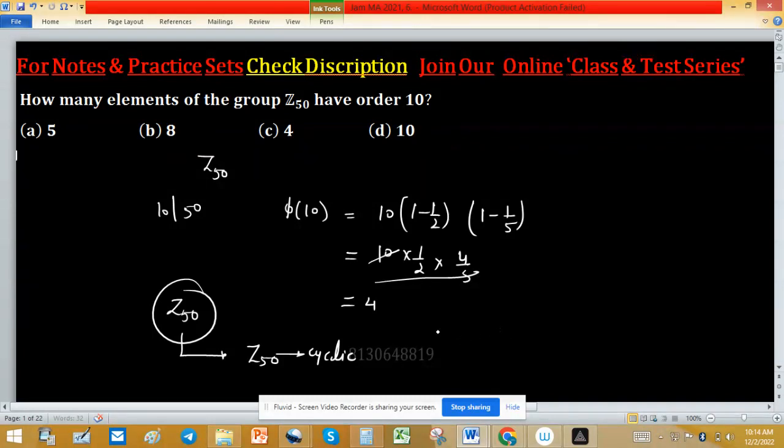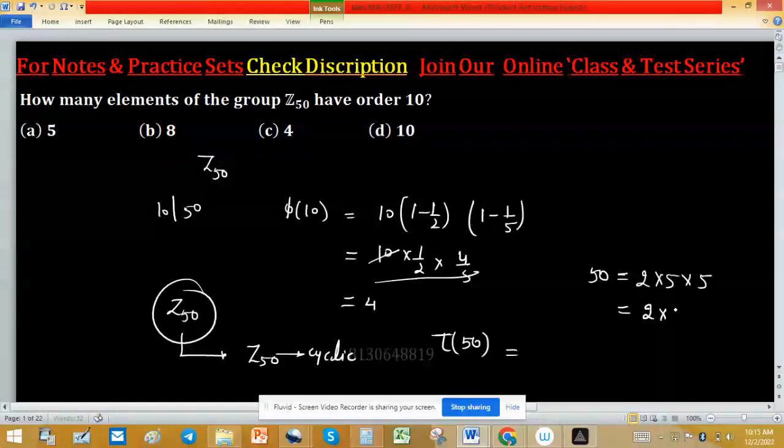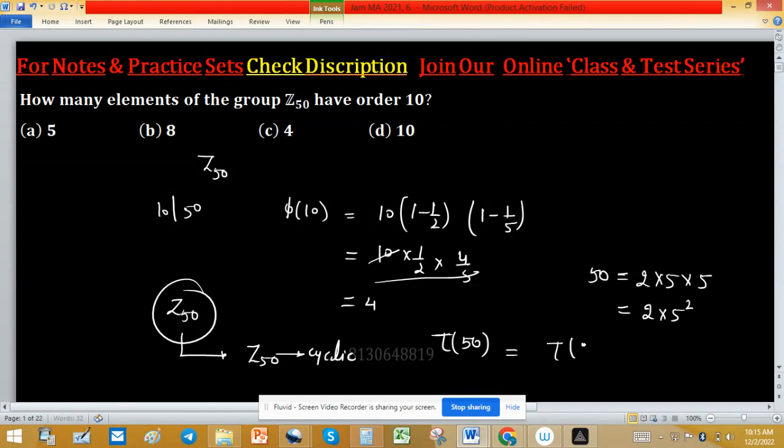It means try to find possible divisor of 50. So we will use tau function, tau function gives you number of divisor for a particular number. For this, if we factorize 50, so we can write 2 into 5 into 5 means 2 into 5 square. So τ(2 into 5 square) and the value is 2 plus 1 means exponent will play the role to find value of tau function and 2 plus 1. So 3.